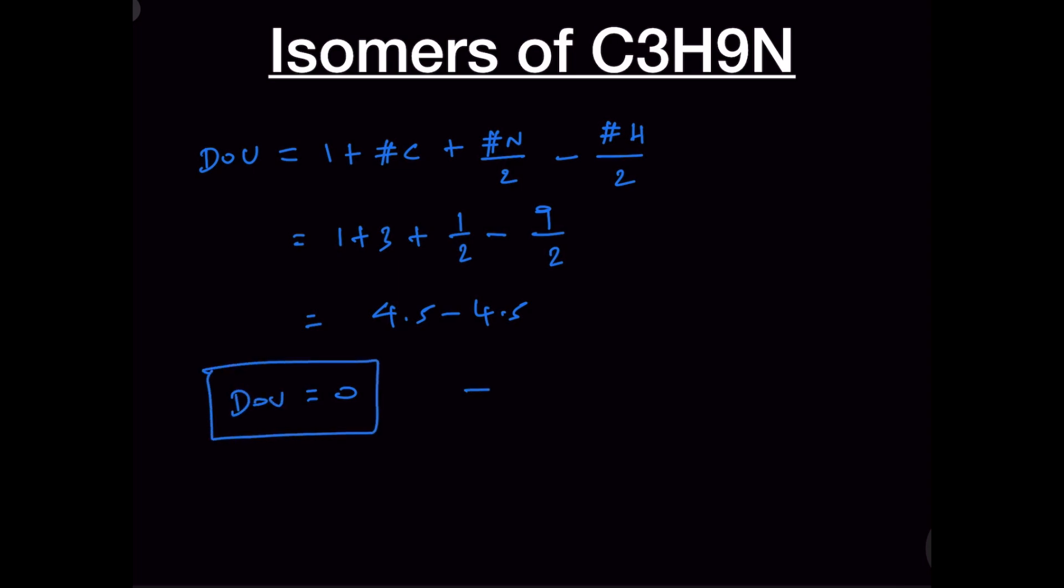That means no double bonds or rings are possible for this elemental composition. We can definitely write propane-1-amine: CH3-CH2-CH2-NH2. This is propane-1-amine.